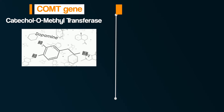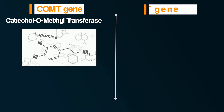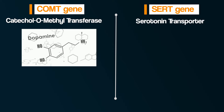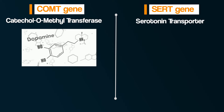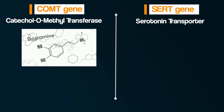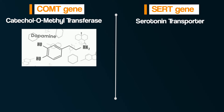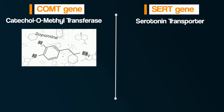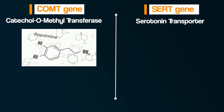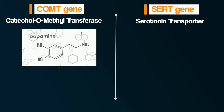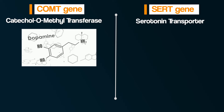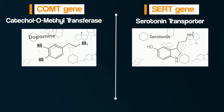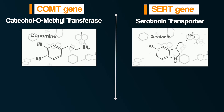Then secondly, there is the SERT gene, which stands for serotonin transporter. The SERT gene also appears to be changed or mutated in individuals with OCD. This change in the SERT gene can lead to a decrease in the amount of serotonin.